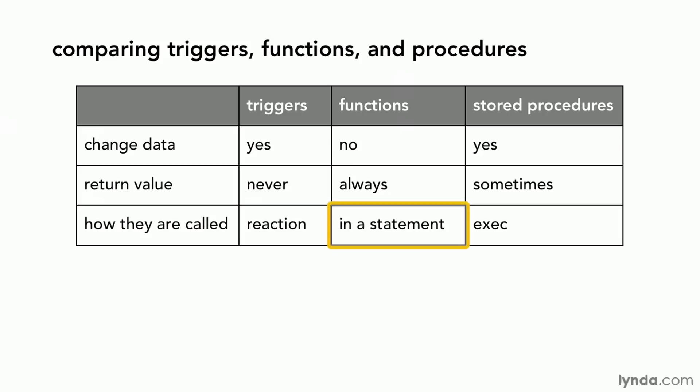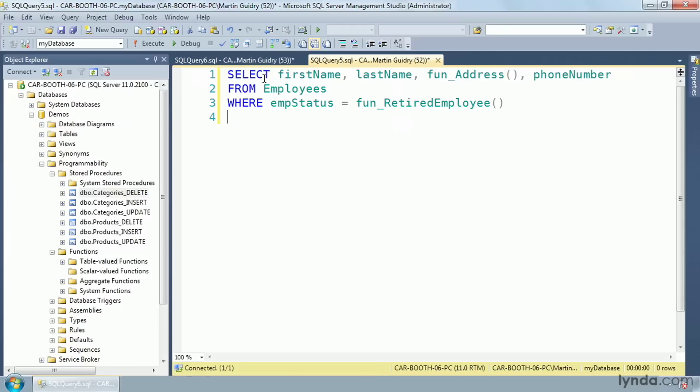So a function has to be part of a SELECT statement. So we see here we have a typical SELECT statement calling first name and last name, but if I wrote a function that combined that into full name, I could just use that inline with the SELECT statement. I can use a function in the column list of a SELECT statement. I can also use it in the WHERE clause. I could also use it in the ORDER BY clause of a SELECT statement.